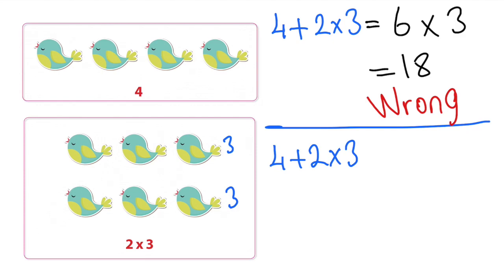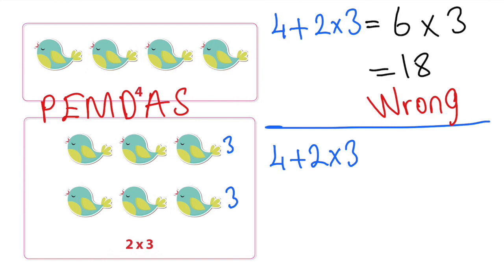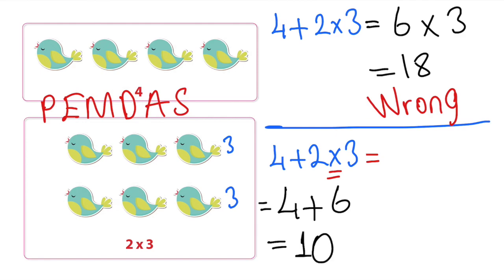We need to follow the rule, otherwise we cannot reach the correct answer. Parentheses first, then exponent, then multiplication or division, then addition or subtraction. As you see, multiplication comes first, so we do multiplication first and then addition: four plus two times three — we do two times three equals six, then four plus six equals 10. When we count the birds we find there are 10 birds.